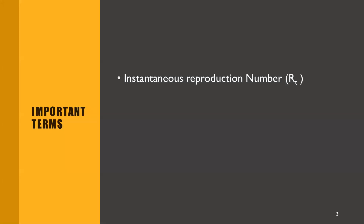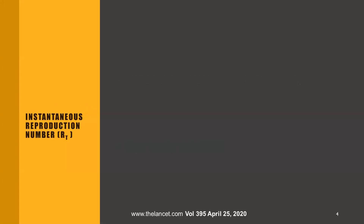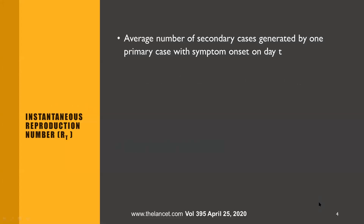Before discussing the second wave further, you should know the two different terms used to assess the degree of a pandemic. The first is the instantaneous reproduction number, or RT, which is the average number of secondary cases generated by a primary case with symptom onset on day T — that is, how many secondary cases are generated from a primary case at a specific point in time.